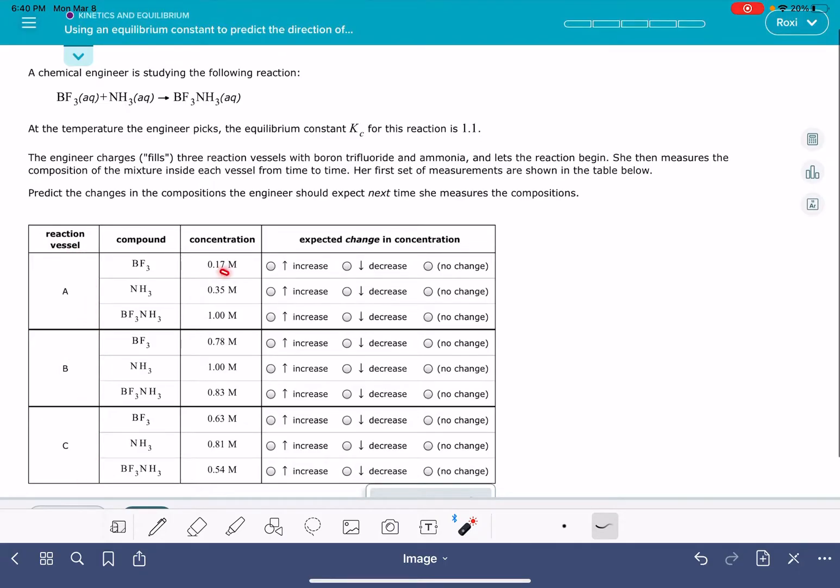The data sets are going to include the concentrations for all of the reactants and products in the equation, and you are going to be asked to predict which substances will increase in concentration, which will decrease in concentration, and which will have no change at all.